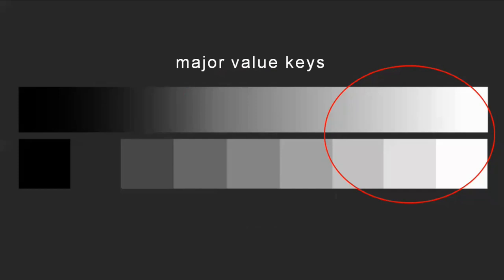Since there are major value keys, then there must also be minor value keys. In a minor value key system, you're going to reduce the amount of tones that you are allowing yourself to use. This is a kind of delimitation — a barrier that you might set up for yourself as a problem. This entire discussion of design from the perspective of looking at problems to solve is how you really want to look at solving a visual issue — by establishing guidelines, saying, 'I can't do this, but I can do this. I can't do that, but I can do this.'